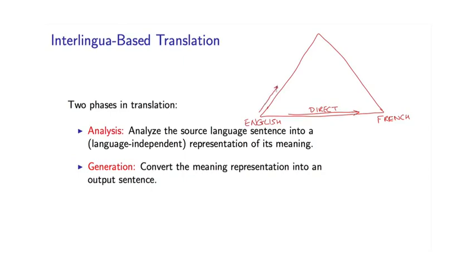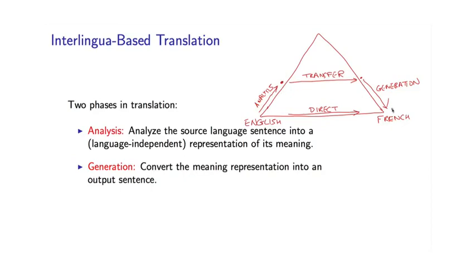In transfer-based systems, we do the following. We do some analysis, so schematically we get to some point a little bit further up the pyramid. Then we have a transfer stage — so this is the English parse tree, for example, and this is the French parse tree. Then finally we have a generation stage. The intuition behind the pyramid is that if you do a bit of analysis, you have less far to go in the transfer stage. You've made your transfer problem a lot easier than in the purely direct case.